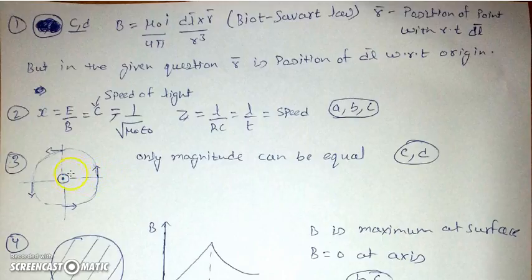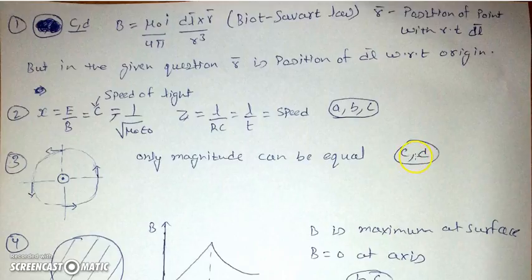If we keep points at a constant distance from the wire, the magnitude will remain the same but the direction will change. At a fixed distance only magnitudes can be equal, and if we vary the distance the direction can be the same. The direction can also be opposite. So the answer is B, C, and D — the direction can be same, the magnitude can be same, and the direction can also be opposite.